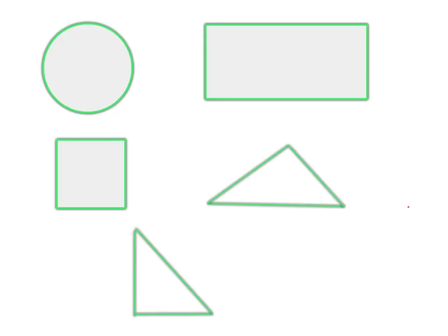Hi guys, so today we're going to continue our work with area and volume, but we're going to look at much more difficult questions — definitely higher level questions for Junior Cert. Just to remind ourselves of what we know already: this is a circle, and we call it circumference rather than perimeter. The circumference of a circle is 2πr.